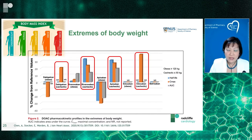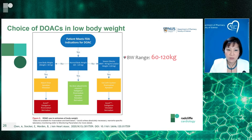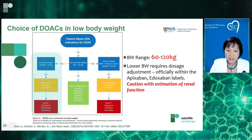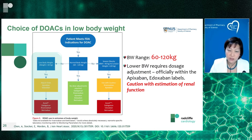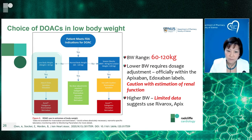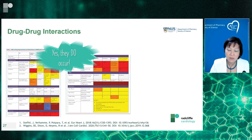For extremes of body weight: with edoxaban, we don't need to worry as much about the obese population. Since apixaban and edoxaban labeling includes body weight adjustments, both can be used for low body weight patients under 60 kg — but be careful about using the correct equation for renal function estimation. For higher body weight, data are limited, but rivaroxaban and apixaban may be preferable.